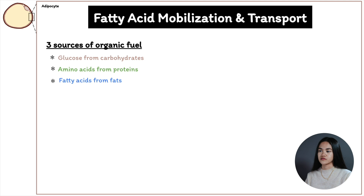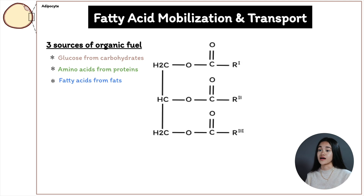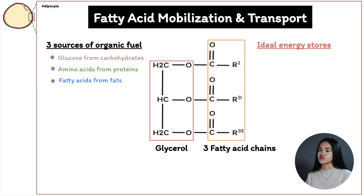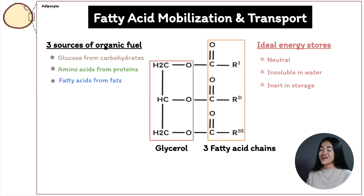Before we discuss how fatty acids are released from lipid droplets, let's answer what makes lipids ideal as energy stores. We have the structure of a simple lipid — three fatty acid chains bound to glycerol, this is triacylglycerol. Lipids are ideal because they are neutral, with no ionizable groups, insoluble in water, and inert in storage. Fatty acids are reduced and fully unhydrated, meaning they have no water bound to them, which means less weight to carry around.